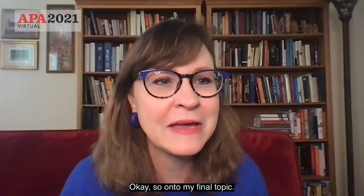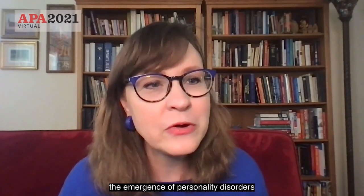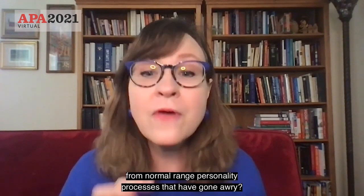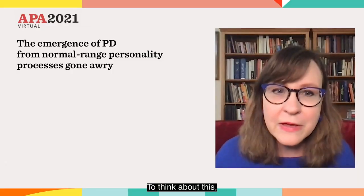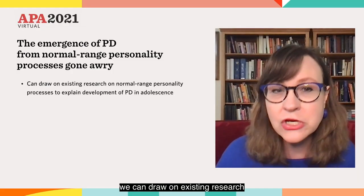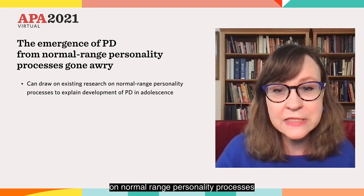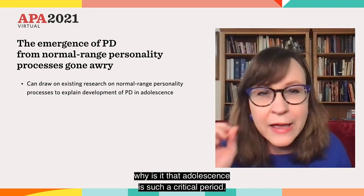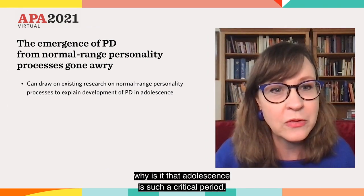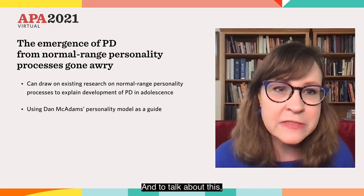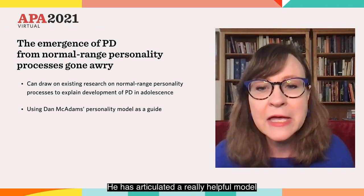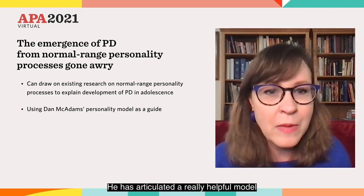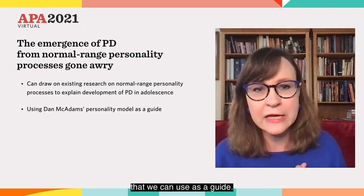So on to my final topic. What have we learned about the emergence of personality disorders from normal range personality processes that have gone awry? To think about this, we can draw on existing research on normal range personality processes that will help us to understand why adolescence is such a critical period. And to talk about this, I'm going to use a model from the personality psychologist Dan McAdams.